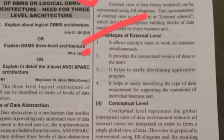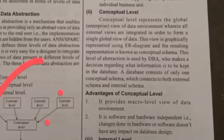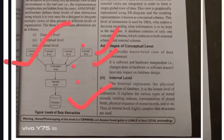The next level is the conceptual level. The conceptual level represents the global view of the data environment. For example, in a college database, the principal has access to student data, faculty data, and management data. A student has access only to student data, and faculty has access only to their own data. The conceptual level is a macro-level view of the data environment. It is software and hardware independent and does not have any impact on data design.